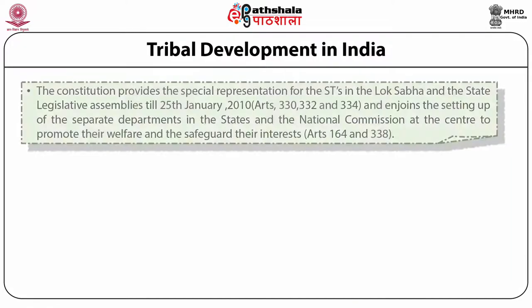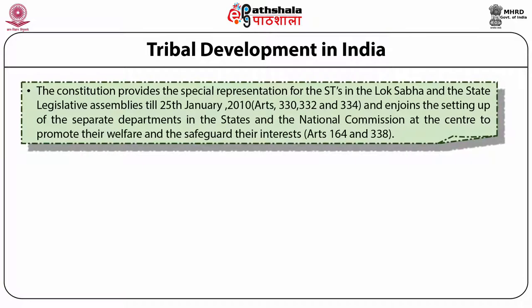With that spirit, the Constitution provides special representation and attention to elevate the poverty and promote the welfare of the scheduled tribes, both in the Lok Sabha and in the state legislature assemblies, till 25th January 2010. Articles 330, 332, and 334 clearly state the enjoining of the setting up of separate departments in each and every state, and exclusively a national commission at the central level in New Delhi to promote their welfare and safeguard their interests. This has been enshrined in Articles 164 and 338 of the Indian Constitution.